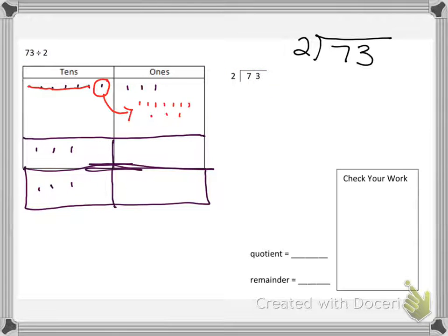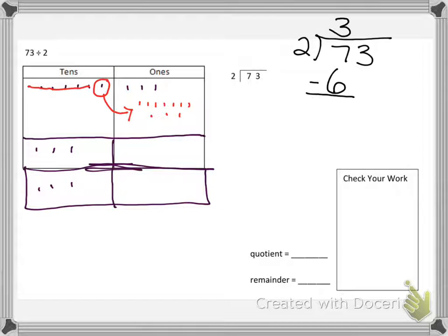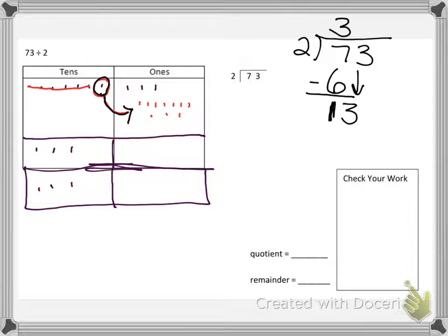How does that look now in our standard algorithm? Well, we broke up our 7 into two groups and that gave us 3 in each group. So we're going to put a 3 here. 3 in each group and then we do 3 times 2. Because we have 3 in each group and there's two groups, it becomes a 6. And now when we subtract these, we get 1. So we have 1 ten left over, which was right here. But we decomposed it and made 10 ones. So now we are left with 13 in the ones column.